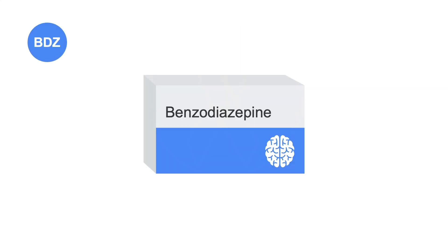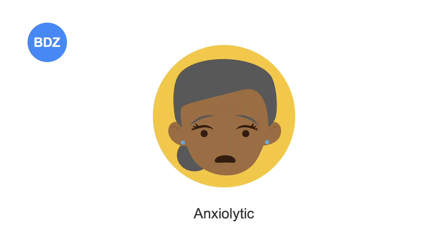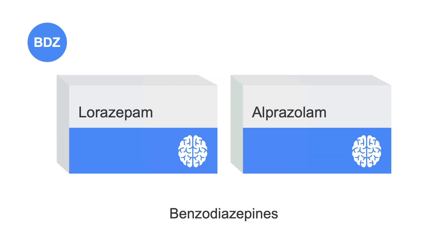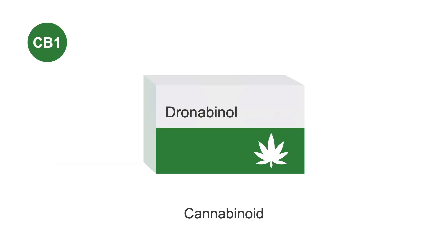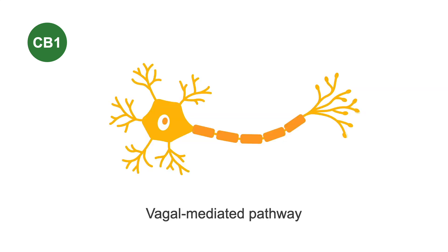Benzodiazepines also act centrally to reduce nausea. They work primarily through their anxiolytic function and are thought to reduce anticipatory nausea and vomiting. While any benzo can be used here, the most common examples are lorazepam and alprazolam. Finally, we have the cannabinoids. The main example here is dronabinol. Cannabinoids are considered alternative therapy for nausea and act on the cannabinoid 1 or CB1 receptor in the vagal-mediated pathway of nausea.